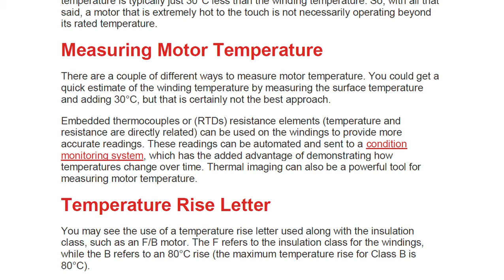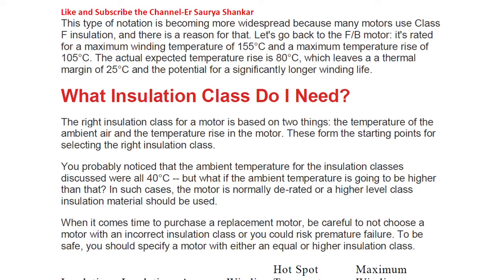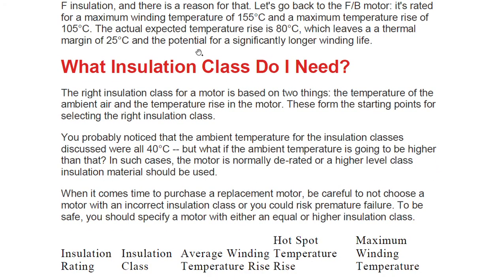You may see a temperature rise letter used alongside the insulation class, such as an F/B motor. The F refers to the insulation class for the windings, while B refers to an 80°C rise — the maximum temperature rise for Class B is 80°C. An F/B motor is rated for a maximum winding temperature of 155°C and a maximum rise of 105°C, but the actual expected temperature rise is 80°C, which leaves a thermal margin of 25°C.